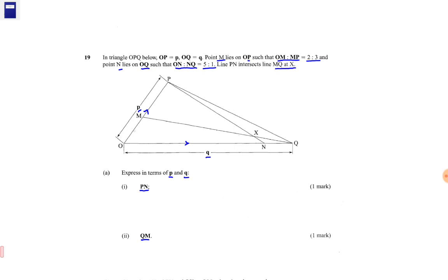This implies that OM is 2 over 5 of P, then MP is 3 over 5 of P.